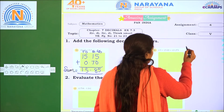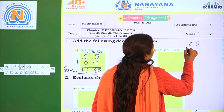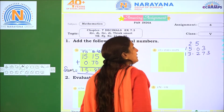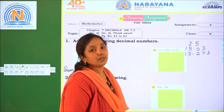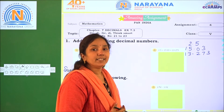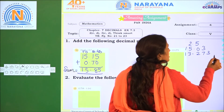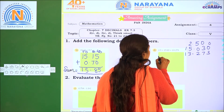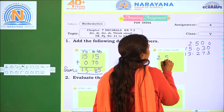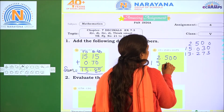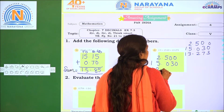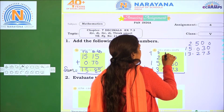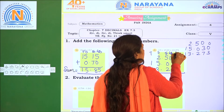The next set of numbers to add are 2.5, 15.03, and 13.273. The maximum decimal places are 3, so we complete the remaining with zeros: 2.500, 15.030, and 13.273. We set up ones, tens, tenth part, hundredth part, and thousandth part columns.